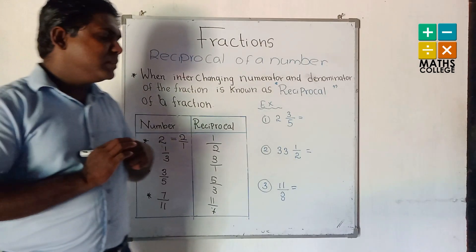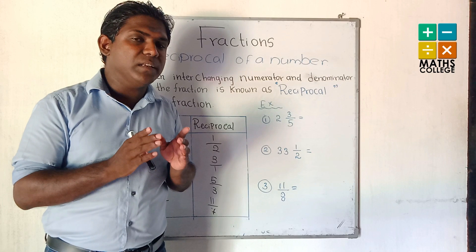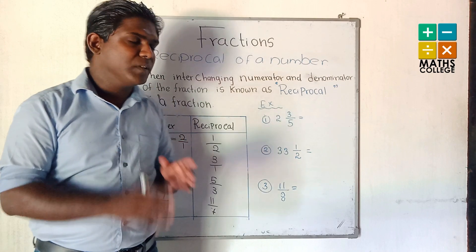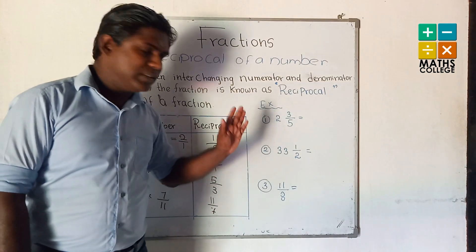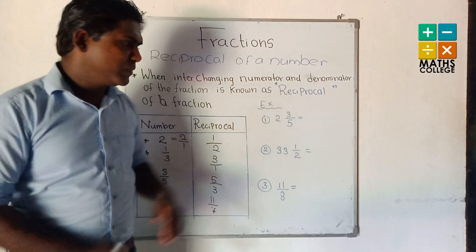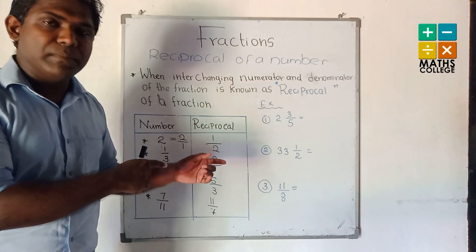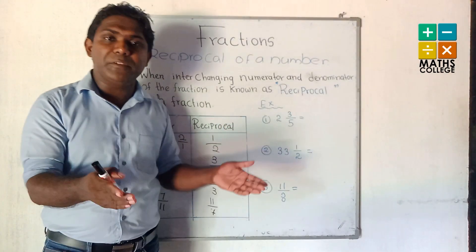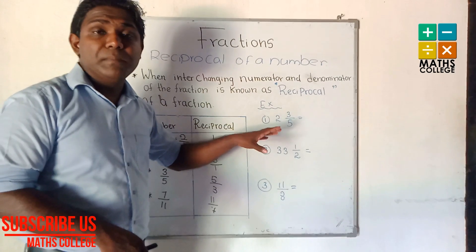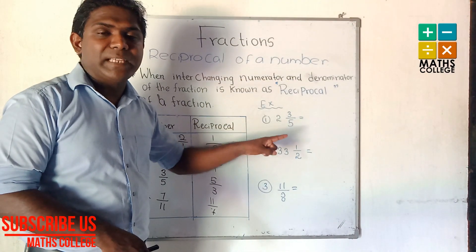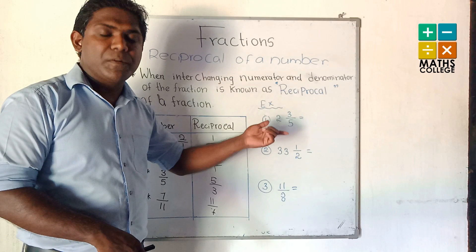I think you now understand what is the reciprocal. Let's go to three examples. Here we have a mixed number. How to write the reciprocal of a mixed number? You know, for a mixed number, the first step is to convert it as an improper fraction.